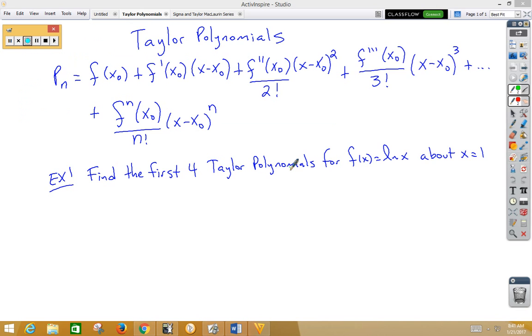In this video, we're going to learn about Taylor polynomials, and a Taylor polynomial is in this form. A Taylor polynomial is a general category name about any number, but usually the number that it's about, which is your x sub zero, is something other than zero. If it is zero, then it becomes a Maclaurin polynomial.